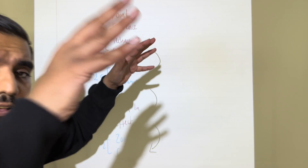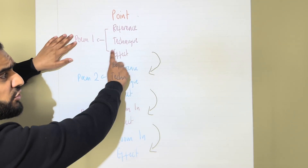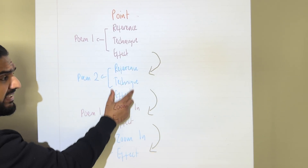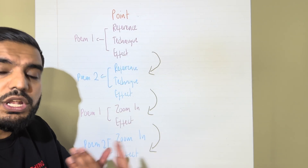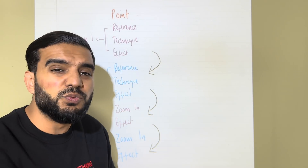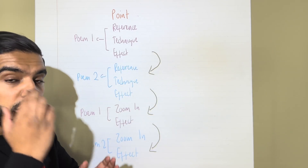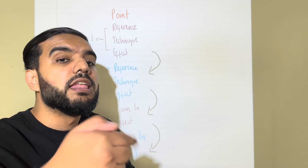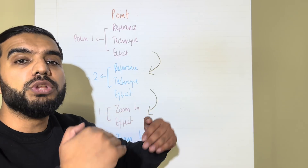Have one point that summarizes both poems, then go to the first unseen poem and look at a quote, technique, and effect. Then compare across to poem number two and do the exact same thing. Then bounce back to poem one and zoom in — on a word, a phrase, or another device — give the effect, then go back to poem two. This constant back and forth ensures you are comparing, which is an integral part of the mark scheme.